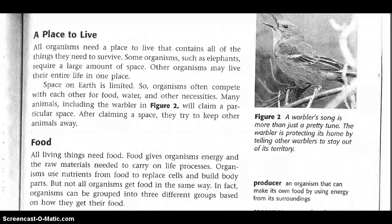All organisms need a place to live that contains all of the things they need to survive. Some organisms, such as elephants, require a large amount of space. Other organisms may live their entire life in one place. Space on Earth is limited, so organisms often compete with each other for food, water, and other necessities. Many animals, including the warbler in Figure 2, will claim a particular space and try to keep other animals away.